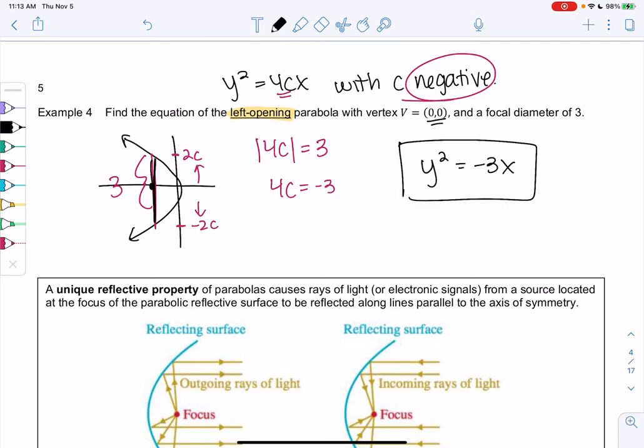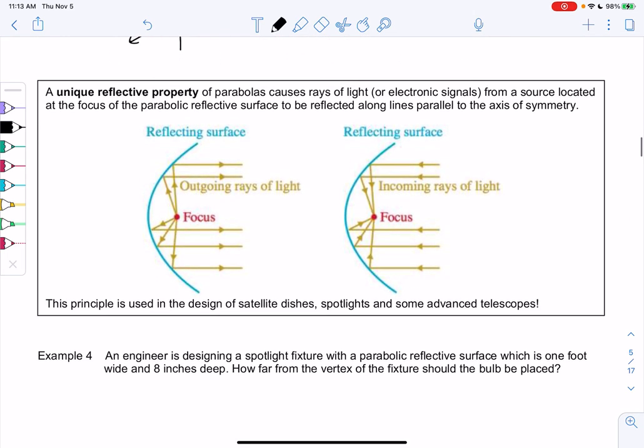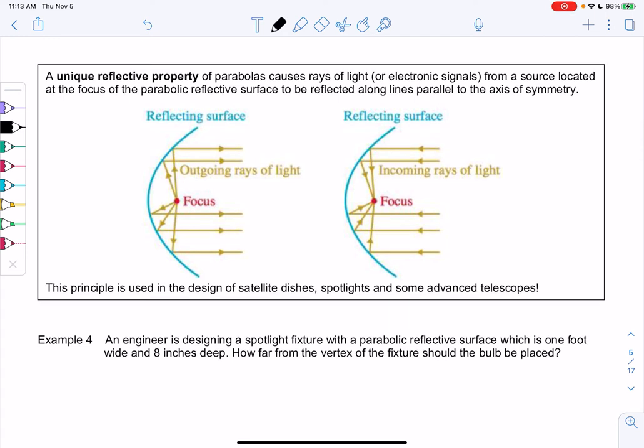Alright, let's do one more in this video. So there's also, this is why we're looking at parabolas in a new way. So there's this unique reflective property of parabolas that causes rays of light, or sometimes electronic signals.